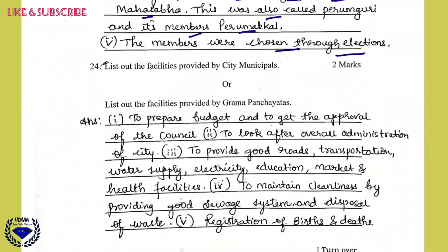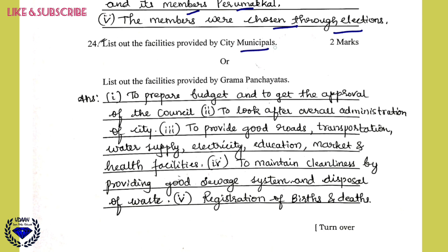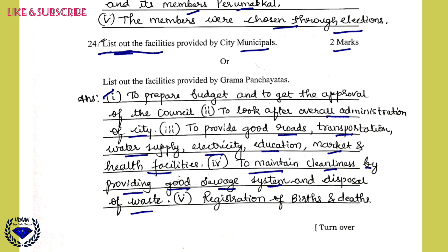Question 24: List out the facilities provided by city municipalities, for two marks. First, to prepare a budget and get the approval of the council. Second, to look after the overall administration of the city. Third, to provide good roads, transportation, water supply, electricity, education, markets, and health facilities. Fourth, to maintain cleanliness by providing a good sewage system and disposal of waste. Fifth, registration of births and deaths. Write at least four points for two marks.